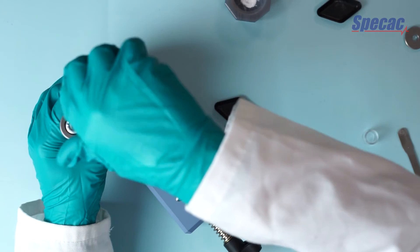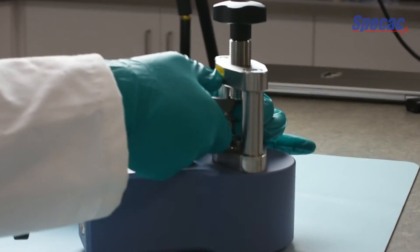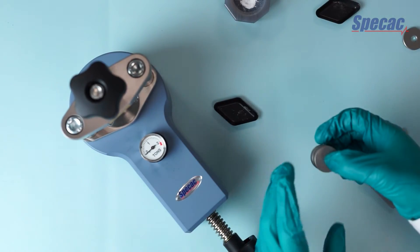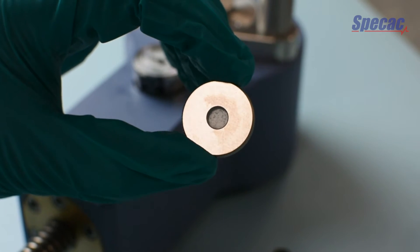We can relieve any remaining pressure using the lead screw and gently remove the pellet die assembly from the press. With a slight twisting action we can remove the top anvil and we should find the sample captured in the ring holder.